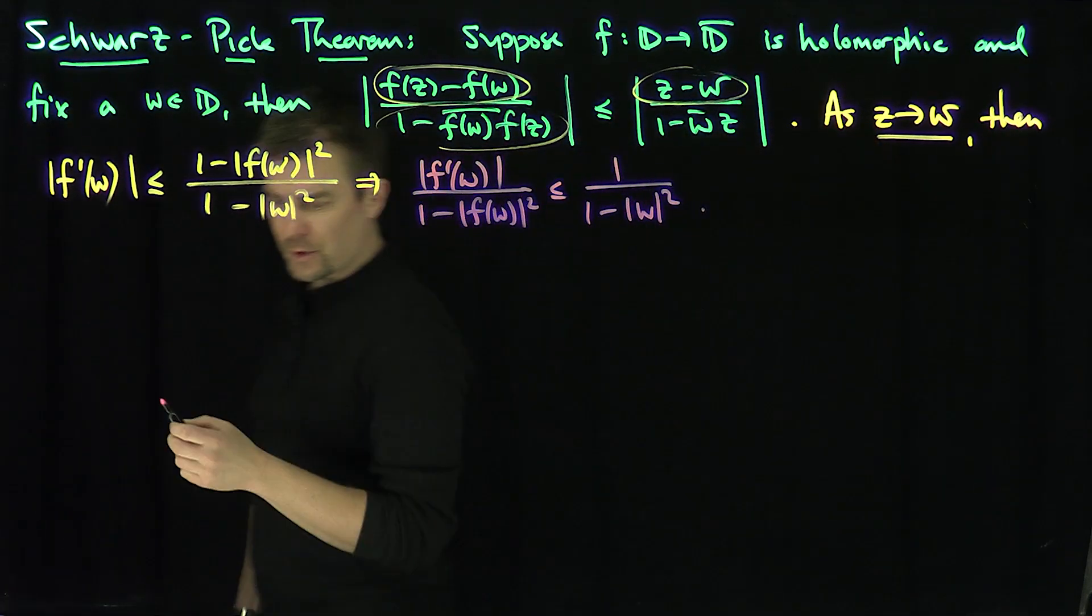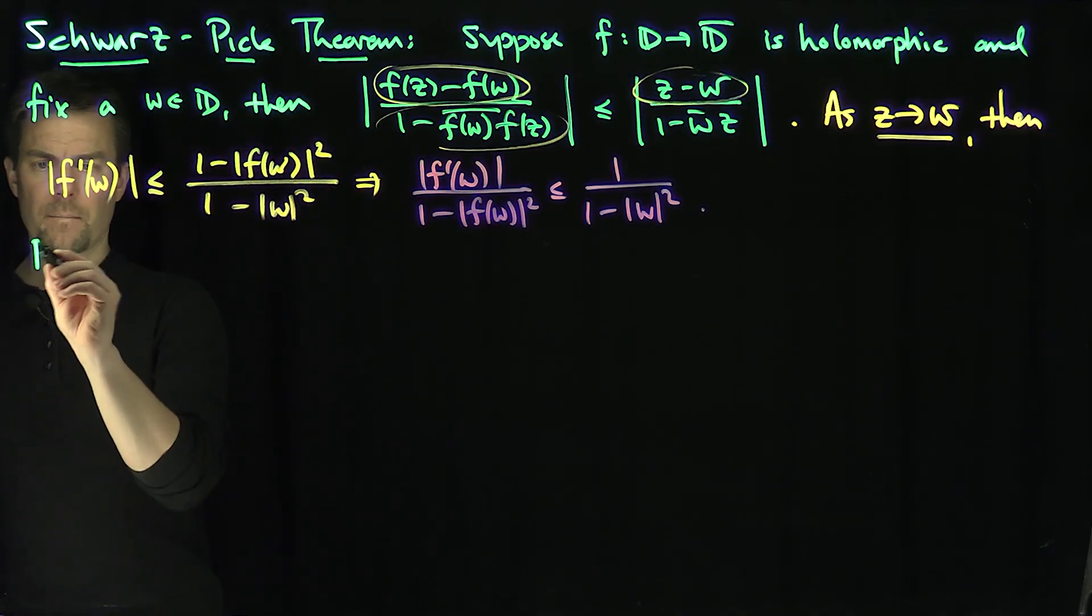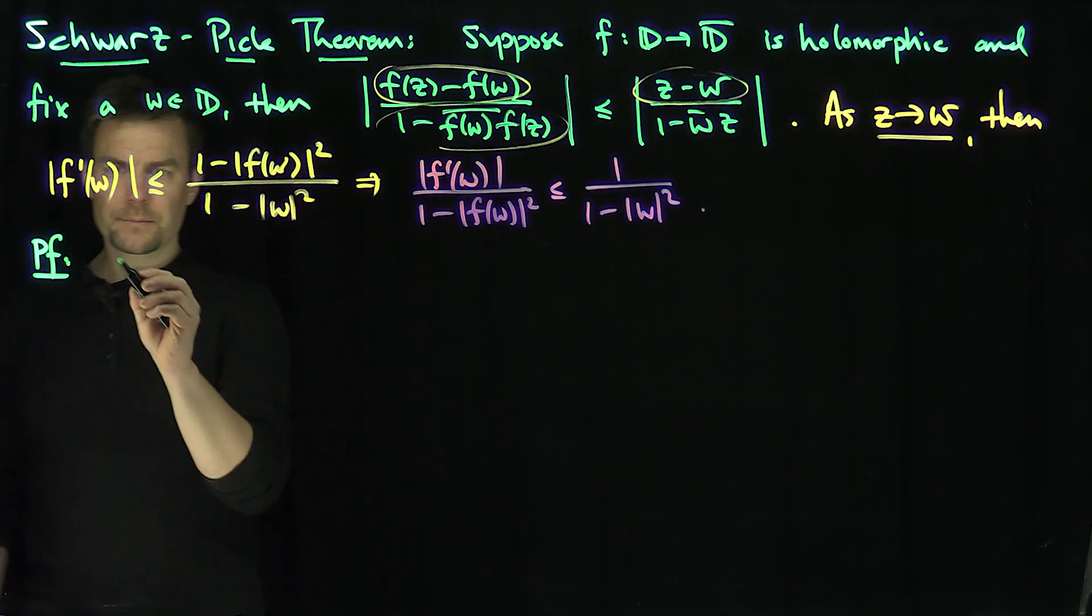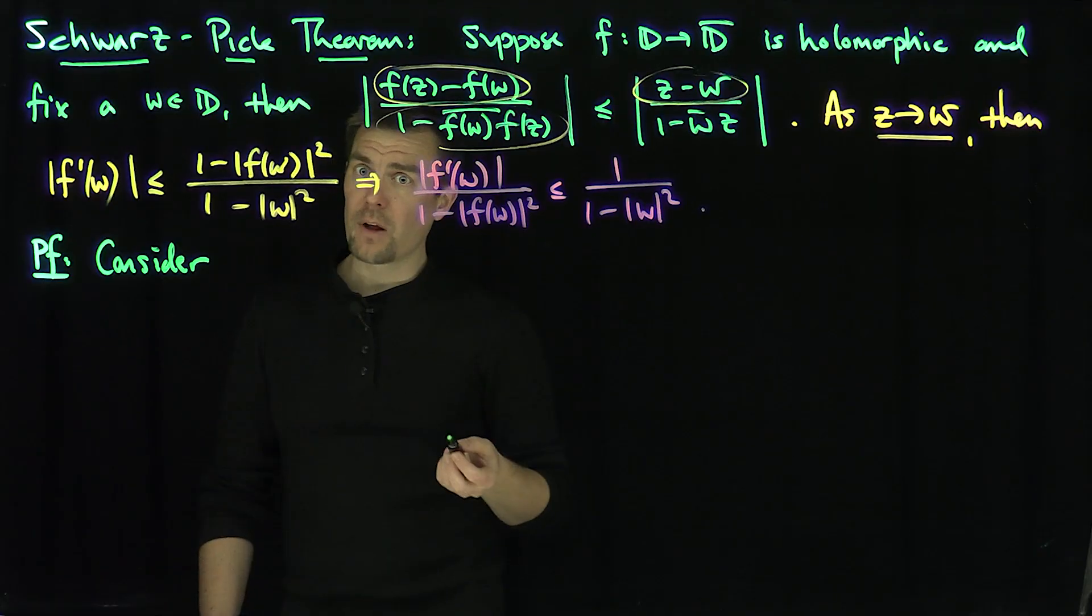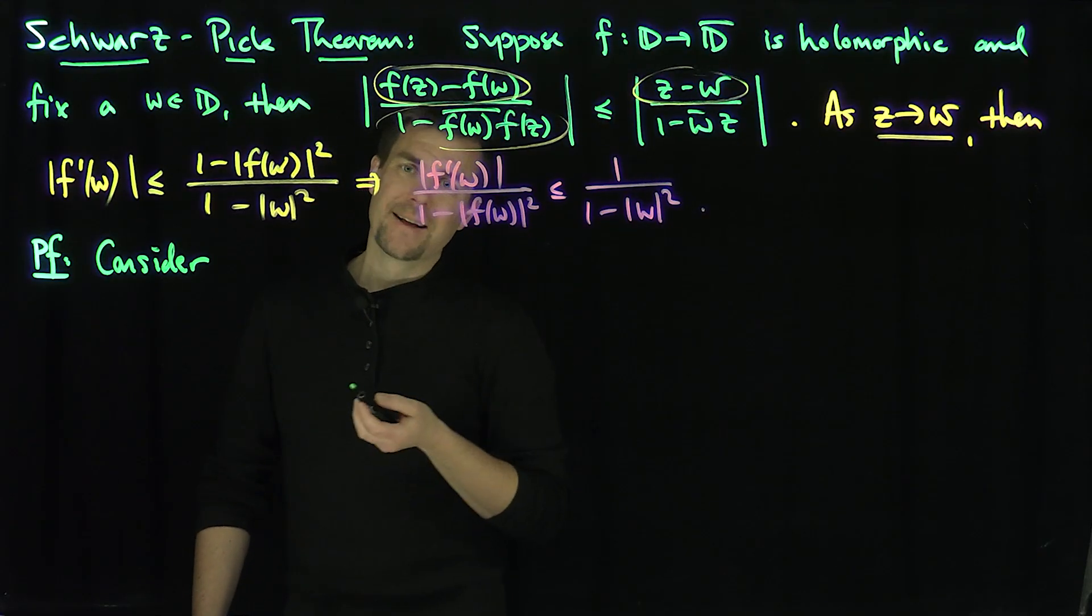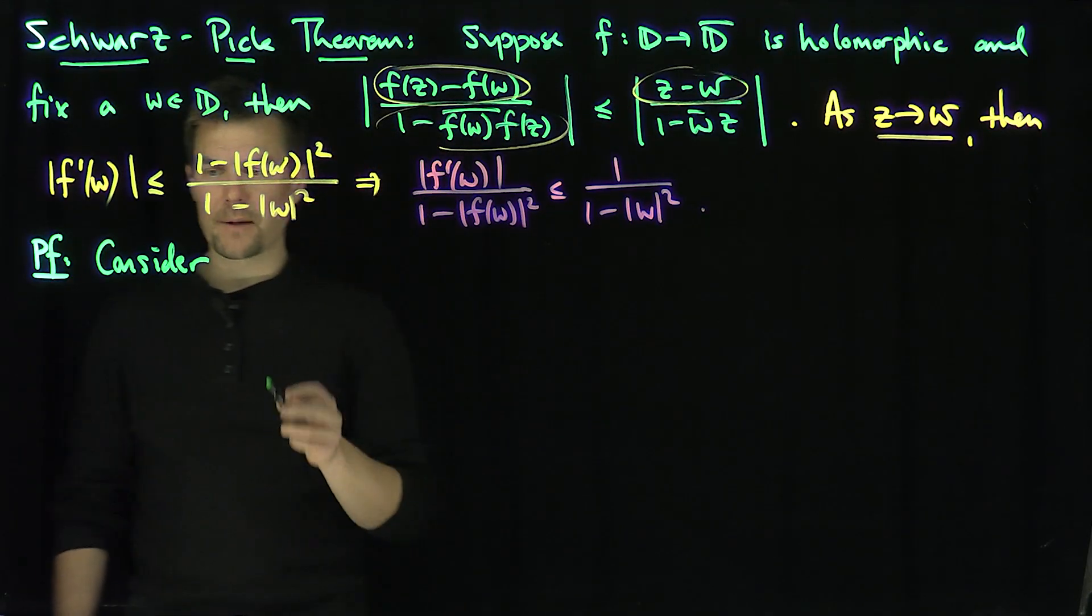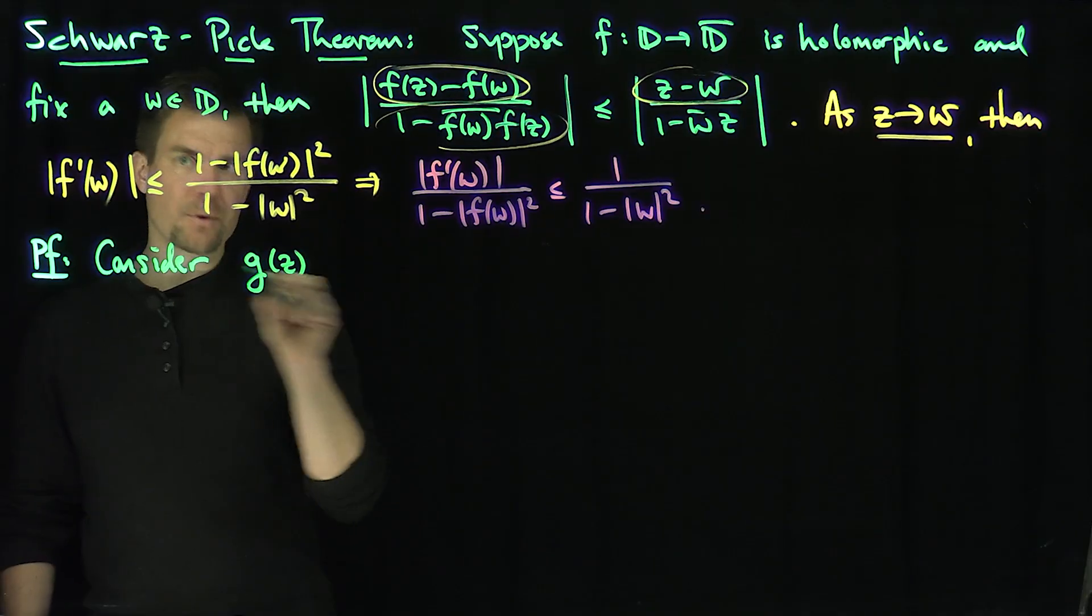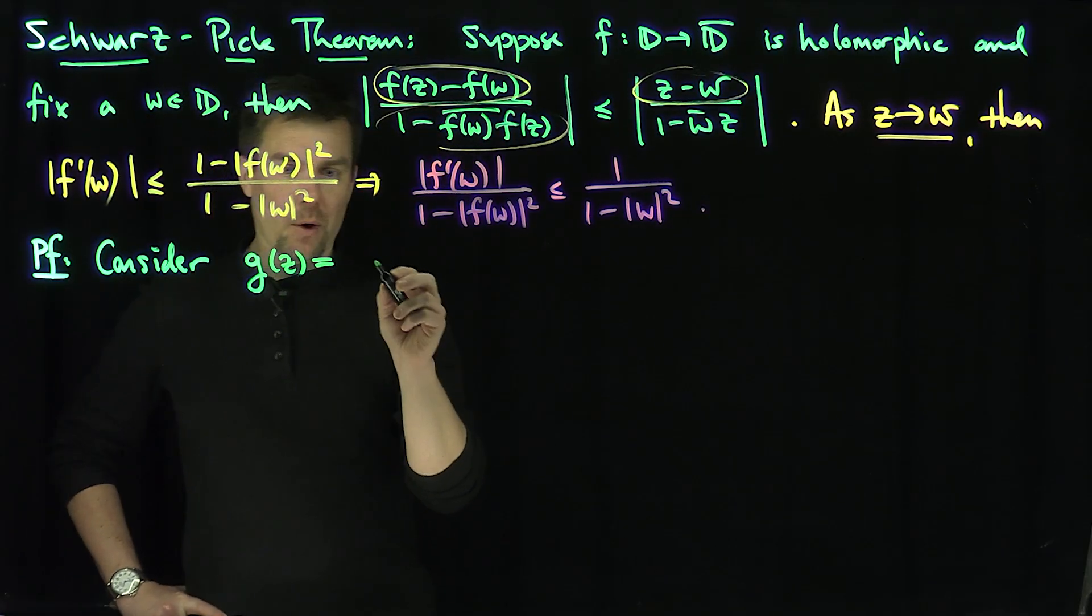So how do you prove this theorem? Here's the proof. If you're taking a complex analysis qualifying exam, this is bound to pop up. It's a typical question on the Schwartz Lemma. Consider g(z), remember w is fixed now, is equal to—to make sure I get my order correctly—